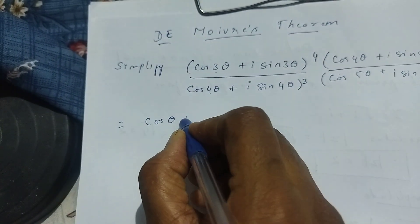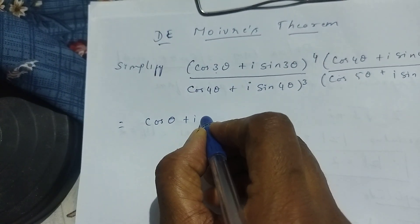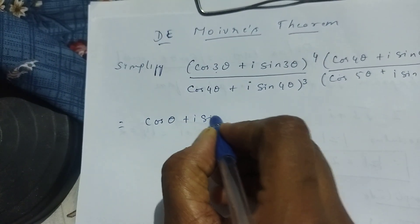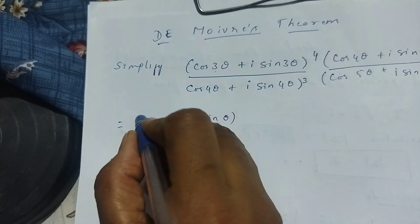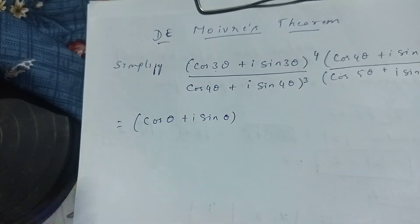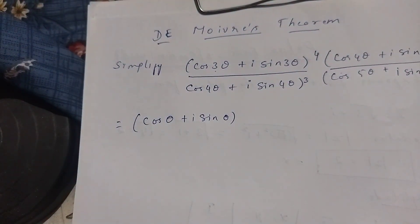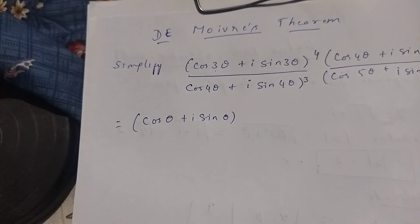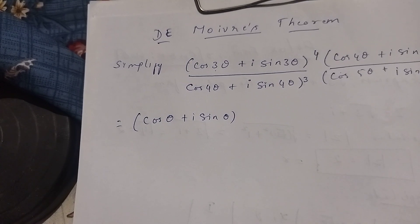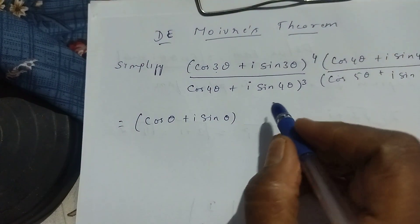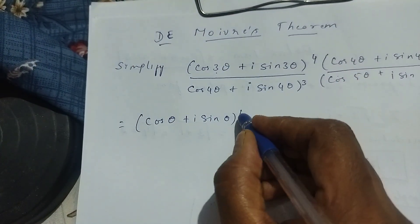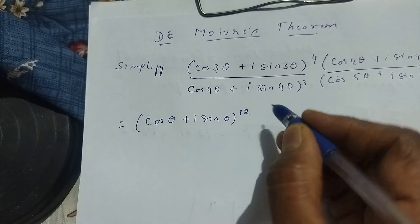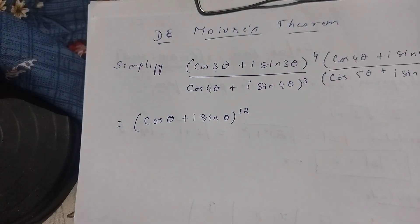You write i sin θ — 3 fours are 12 — so you write 12 here for the first term in the numerator.